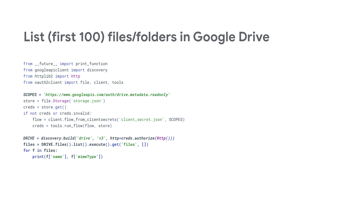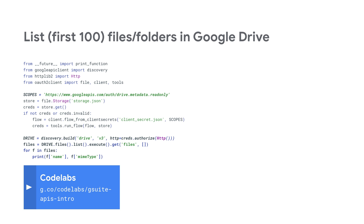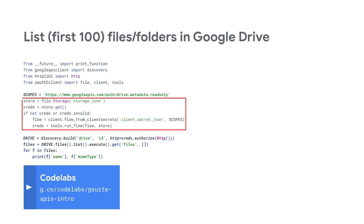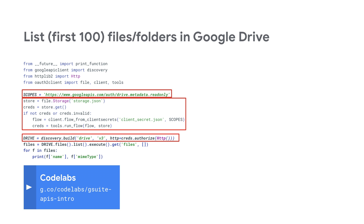Here's code that lists the first 100 files and folders in your Google Drive. Believe it or not, the real application is really just the last three lines. Everything else is just the security boilerplate we covered earlier, plus the requested scopes and API endpoint creation. Once you have an endpoint to the Drive API, it's as simple as creating a file listing query, executing that query, and displaying the results.